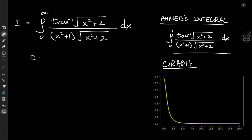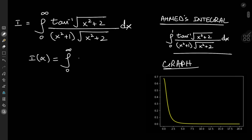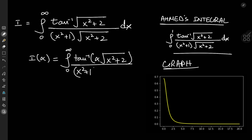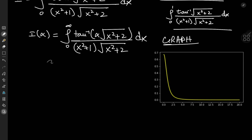We'll start by defining the integral function I(α) as the integral from 0 to infinity of arctan(α · √(x²+2)) divided by (x²+1) · √(x²+2) dx. The first thing we notice is that I(0) = 0, because the numerator contains arctan(0), which is 0, so the whole thing vanishes. And the target integral I is the integral function evaluated at α = 1.